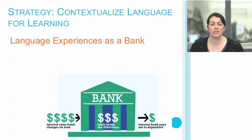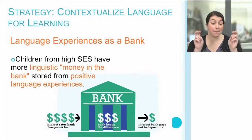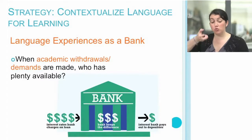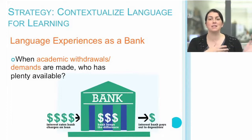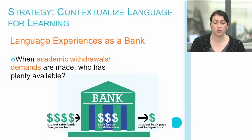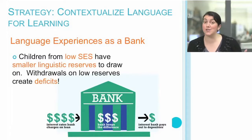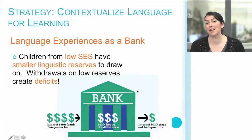To give an analogy, we sometimes have to think of language experiences as a bank. Children from high-income communities often have more linguistic money in the bank, stored away from all these positive language experiences over time. However, when academic withdrawals are made, it's those students who have had those deposits who have plenty available. But for our students from low-income communities, if they have smaller linguistic reserves, when the language of the classroom makes these withdrawals, they often are left with a deficit — and when there's a deficit, they're not taking away the learning that you're trying to provide.